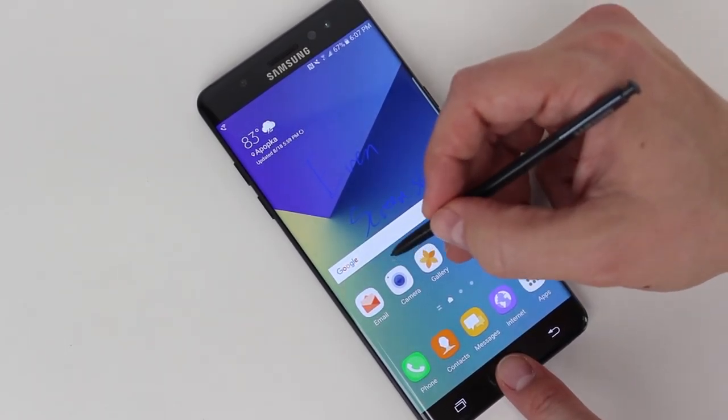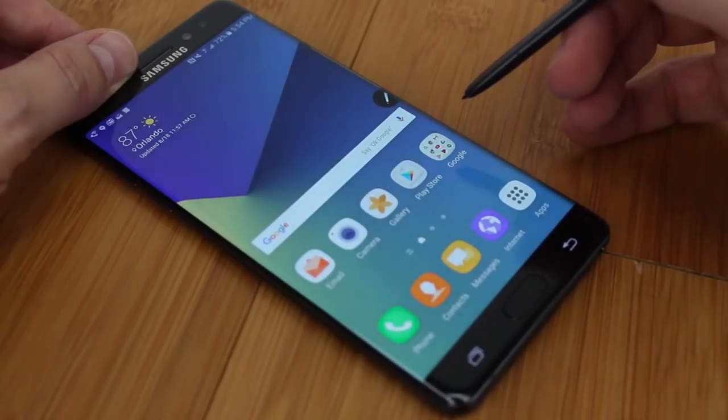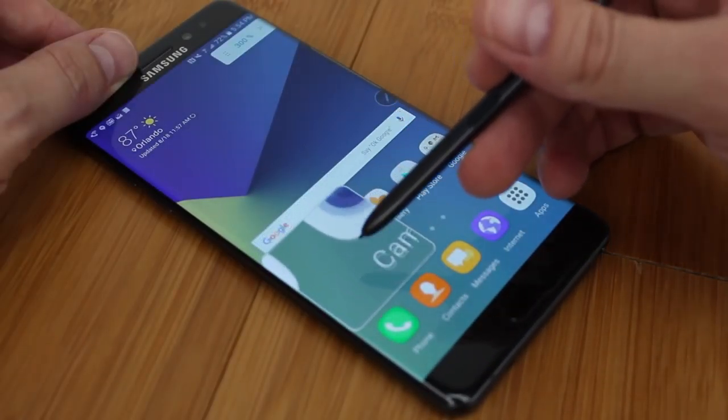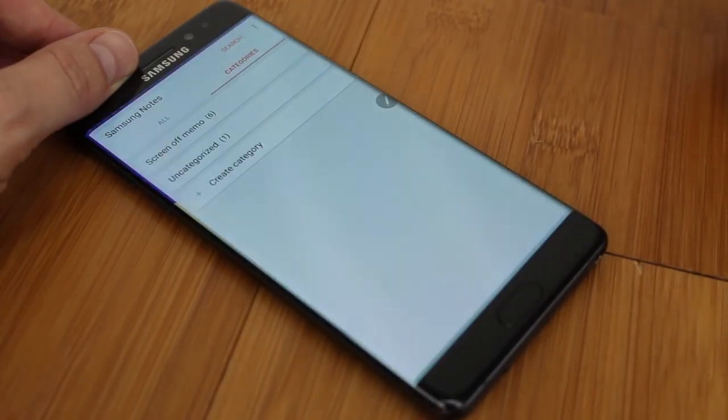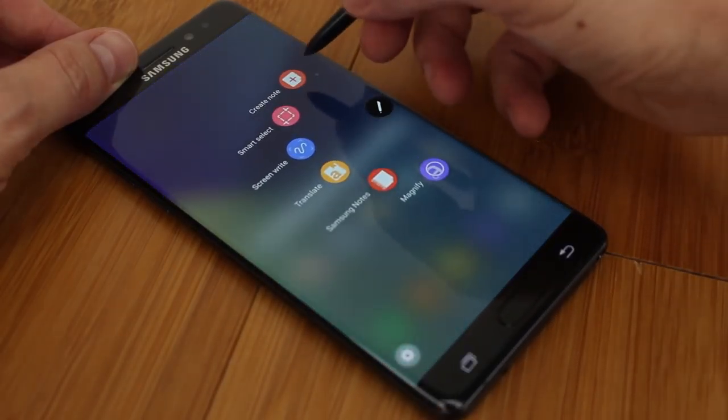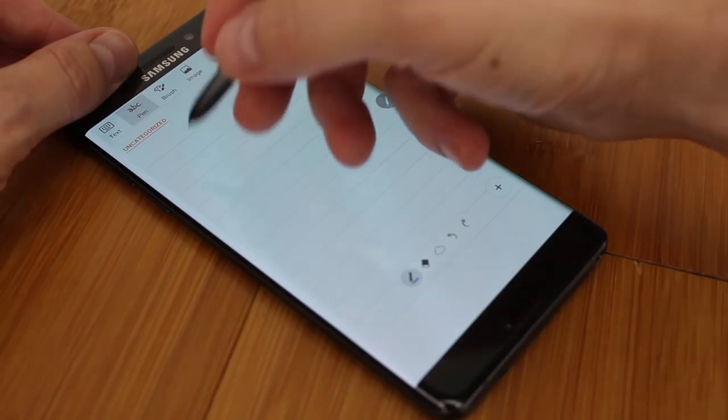Users who can't quite read the screen can use the Magnify feature to zoom around the screen up to 300% magnification, and there's even a really cool new Translate feature that lets you hover over words to translate them into one of dozens of different languages.